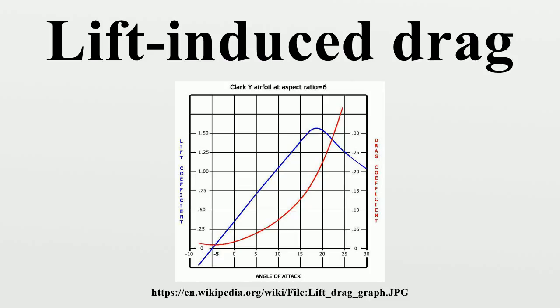Tapered wings with straight leading and trailing edges can approximate elliptical lift distribution. Typically, straight wings produce between 5% to 15% more induced drag than an elliptical wing.